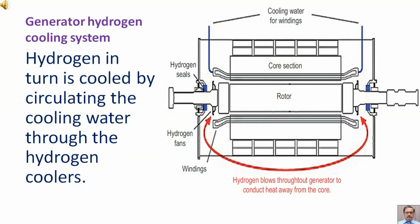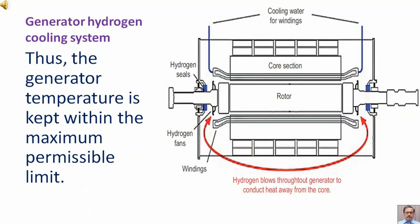Hydrogen in turn is cooled by circulating the cooling water through the hydrogen coolers. Thus, the generator temperature is kept within the maximum permissible limit.